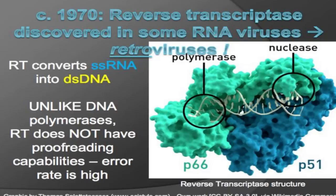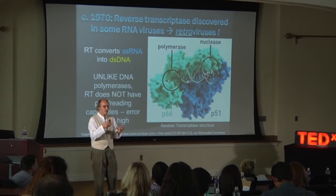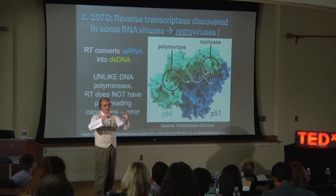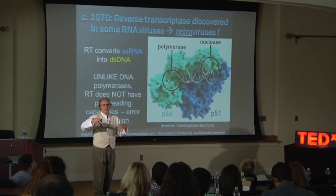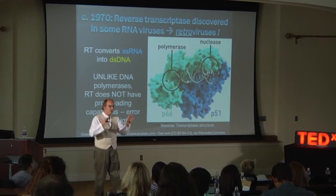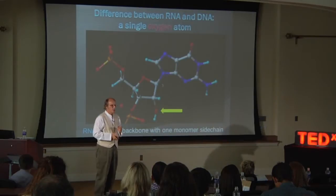They use an enzyme called reverse transcriptase, because it goes in reverse from RNA to DNA, converting single-stranded RNA into double-stranded DNA, with a module that can insert that into our cellular host DNA. Unlike DNA polymerases, reverse transcriptase does not have proofreading and therefore is very error-prone, which creates mutations. For a virus like HIV, this is great — it can copy itself into a swarm of slightly different viruses, some more fit than others, able to evade your immune system, and it just makes lots and lots of them.